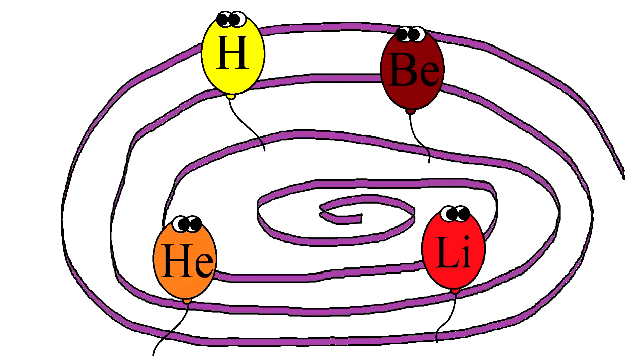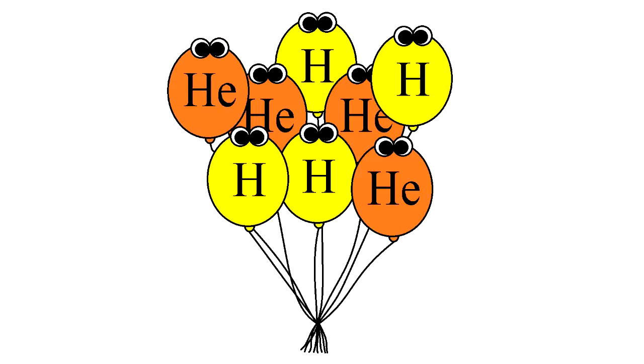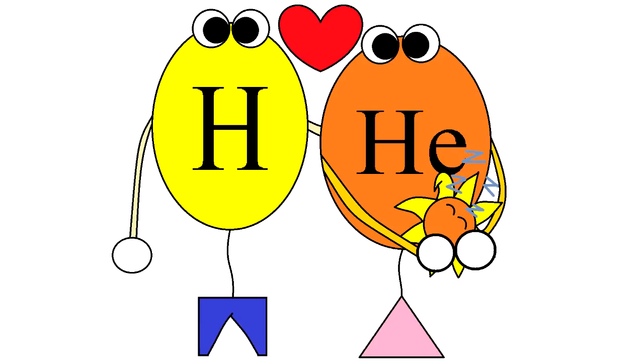After swirling around an infinite universe for 100 million years or so, these gases became lonely and started clumping together. As they clumped, their masses as well as their gravitational poles increased, clumping more and more gas together. Then, the first star, son of hydrogen and helium, was born.